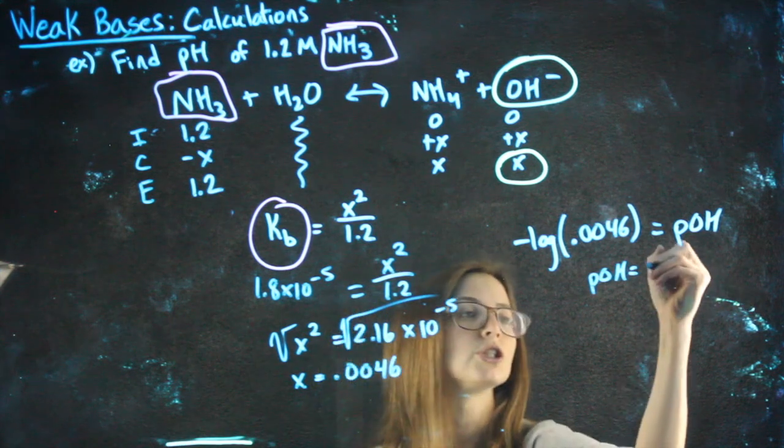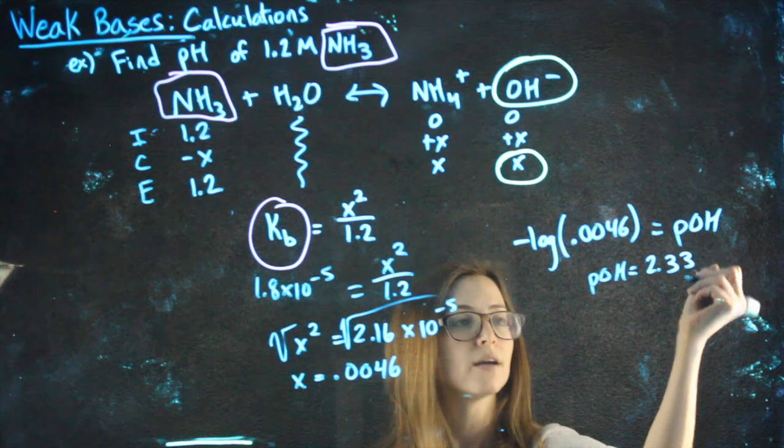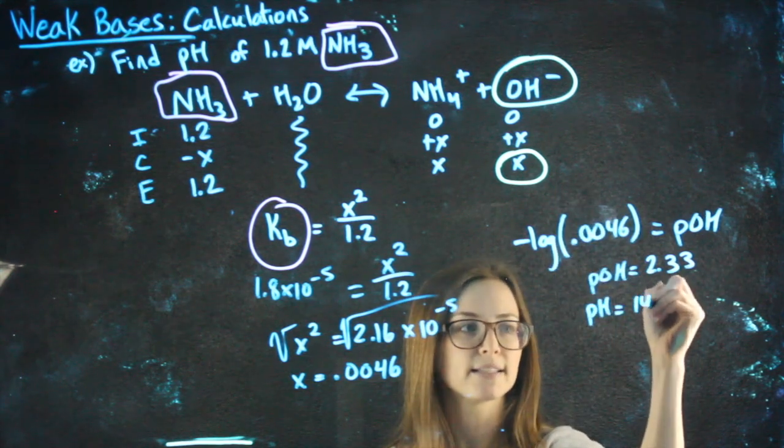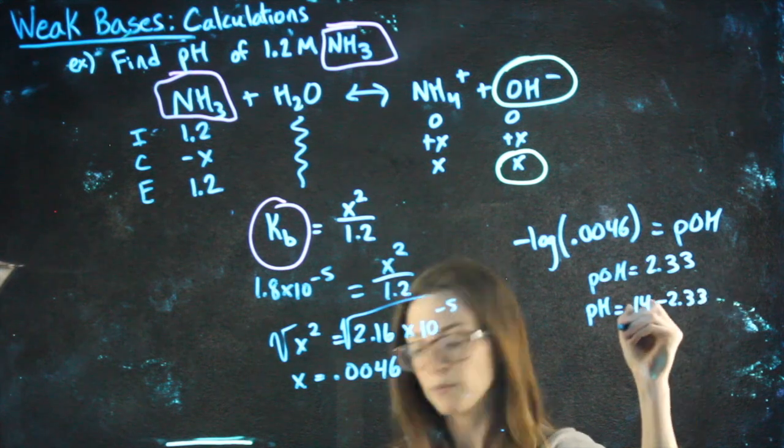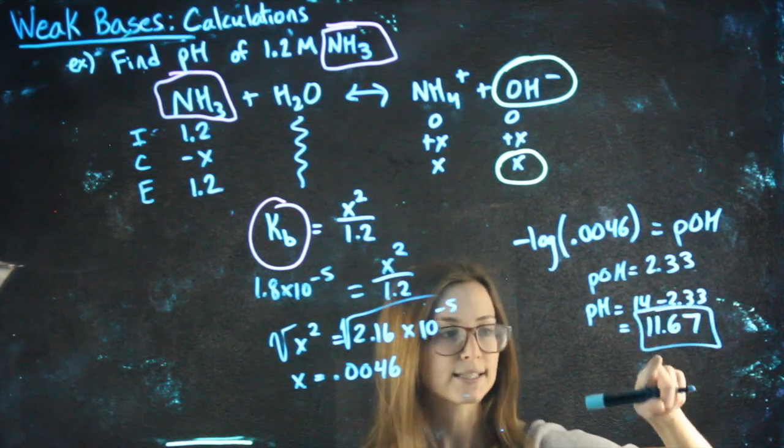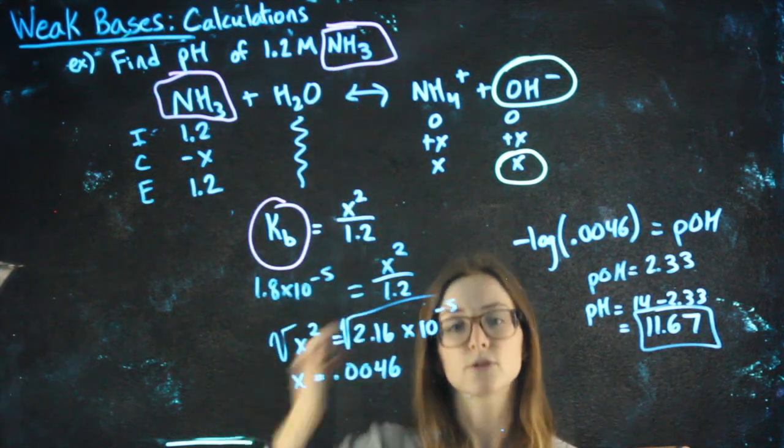So my pOH, if I negative log that, I get like 2.33. To get my pH, I have to subtract from 14. So 14 minus the 2.33 gets me 11.67. That's above 7, and this is a weak base, so that makes sense.